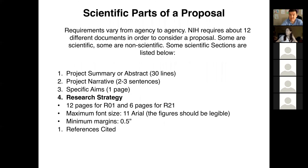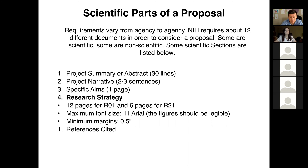There are several scientific parts of an NIH proposal. NIH requires something on the order of a dozen different scientific documents. Some of those we already discussed and drafted — for example, we drafted the summary or abstract, and we also worked on specific aims. As you learned, these are separate documents that we have to prepare and then submit as a package.